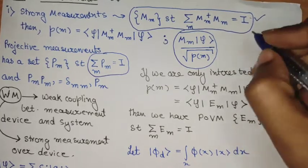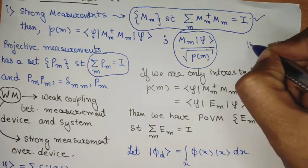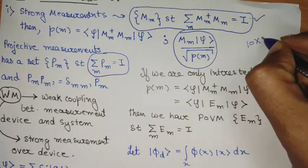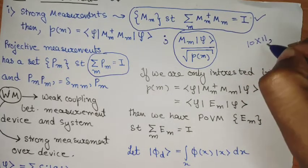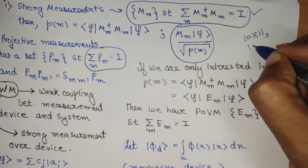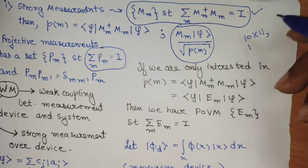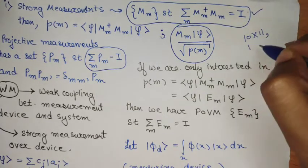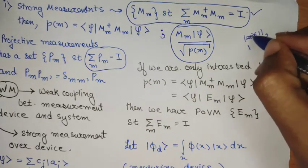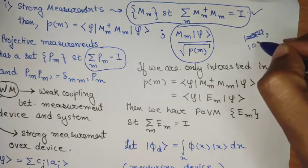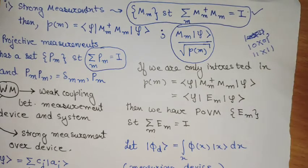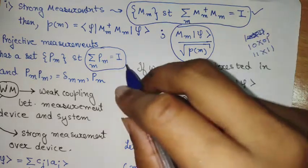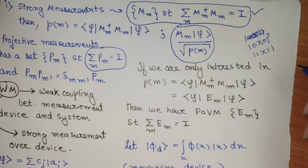We have always performed projective measurements in states for a qubit. For a qubit, we can have projective measurements in states like |0⟩⟨0| or |1⟩⟨1|. This is the projective measurement.